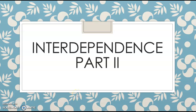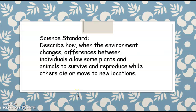Welcome to Interdependence Part 2. The science standard that we're going to be working on is about describing how when the environment changes, there are differences between individuals, plants or animals, that allow some plants and animals to survive and reproduce while others die or move to new locations.